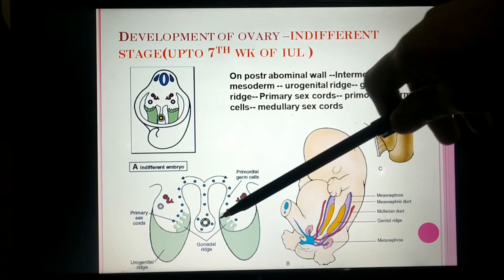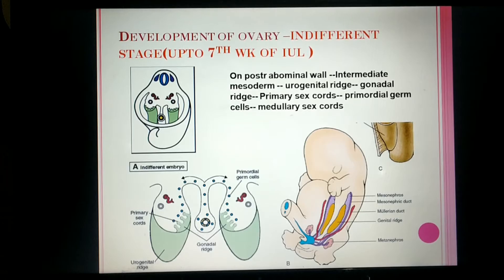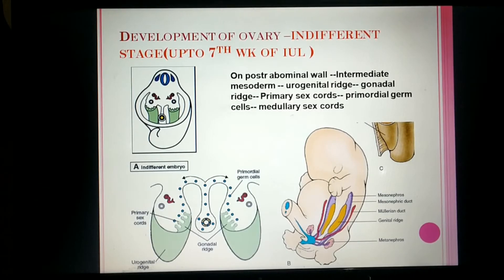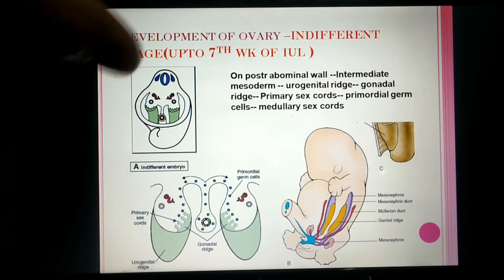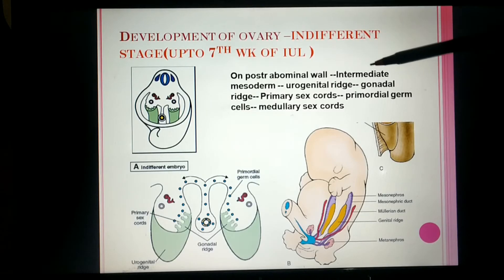The gonadal ridge is produced by proliferation of the coelomic epithelium and underlying mesenchyme. This gonadal ridge will proliferate and send finger-like extensions into the underlying mesenchyme. These finger-like extensions are known as primary sex cords, formed due to proliferation of the coelomic epithelium. The indifferent gonad is divided into two parts: the outer cortex and the inner medulla. This is the indifferent stage.